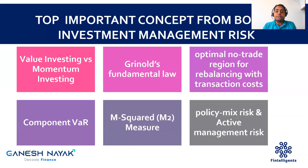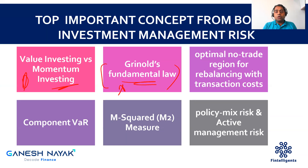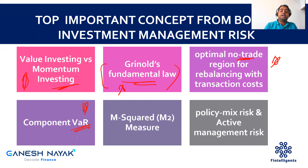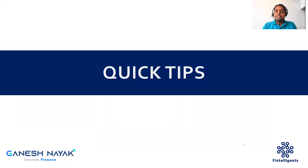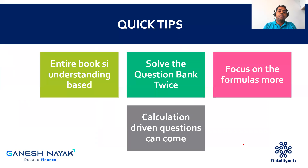The top five important concepts across the book that are really interesting and important for the exam: first, value investing and momentum investing; second, the fundamental law of active management — Greenwald's fundamental law, a formula that can get tested; third, optimal no-trade region — this has been tested in past exams; fourth, component VAR — very high chances of finding a question connected to it; fifth, M-squared related concept. Also, policy mix and active risk management may be tested.